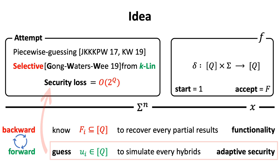which means backward computation will be used in the decryption for functionality. By this, in the piecewise guessing framework, we only need to guess a single state in the adaptive hybrid, which means polynomial security loss.